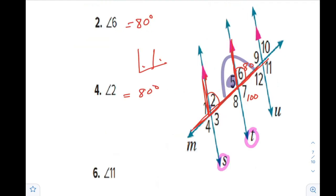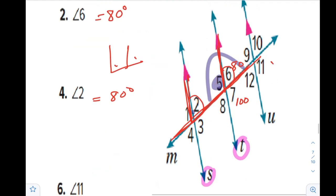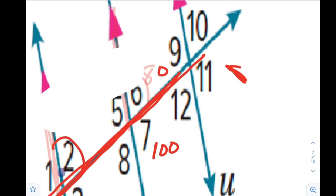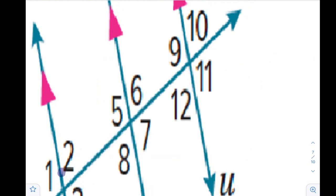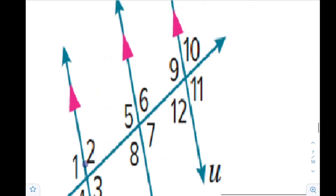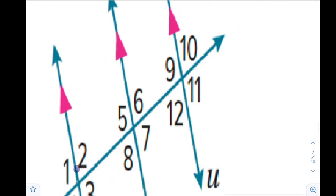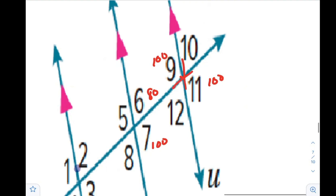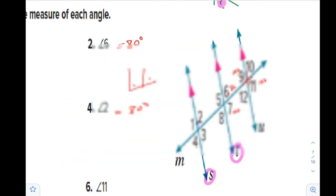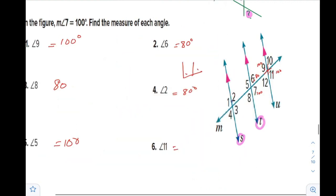Angle 5 is a linear pair with angle 6 and it is obtuse, so angle 5 is 100. Finally, angle 11. You can find it in many ways and also in steps. This angle is 100, this is 80, this is 100, and these are vertical angles. This and that are a supplementary linear pair, so angle 11 is 100 degrees. You can find it using different approaches.